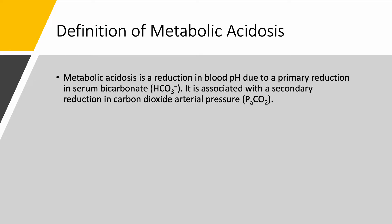In the previous two lectures, we said that metabolic acidosis is a reduction in blood pH due to a primary reduction in serum bicarbonate — so serum bicarbonate is low. It is associated with a secondary reduction in carbon dioxide arterial pressure, or PaCO2.